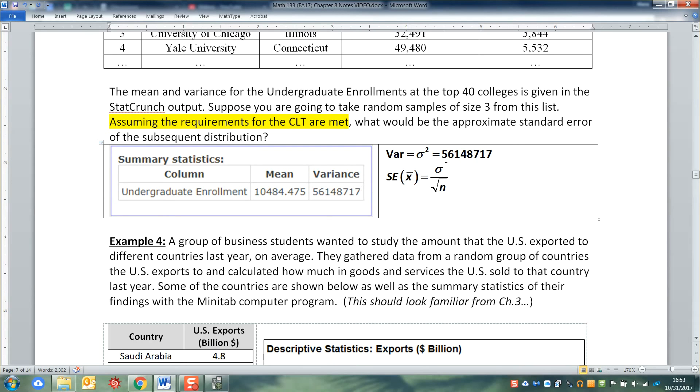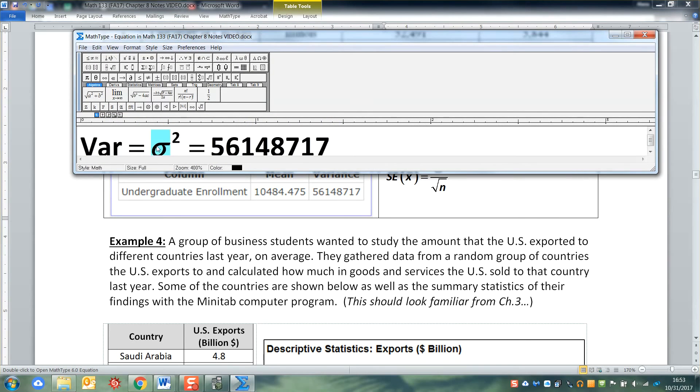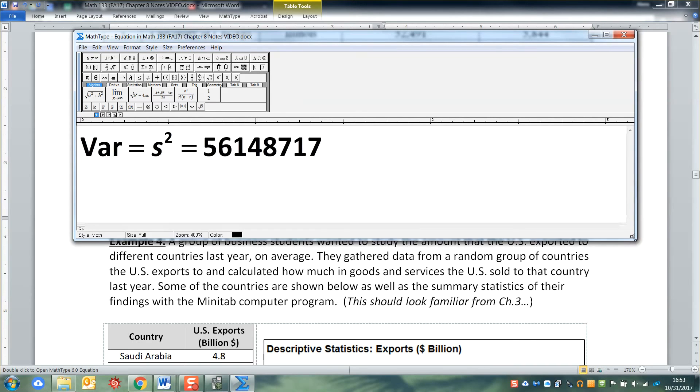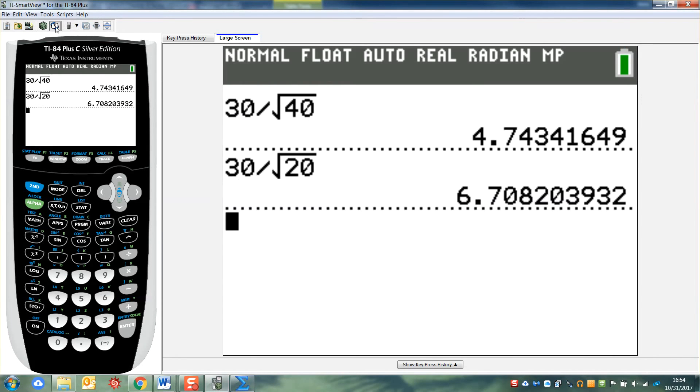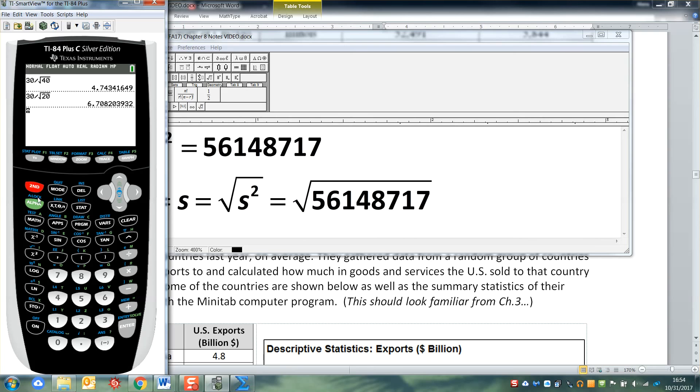So notice right away that the table gives you the variance, which is 5,614,871.7. Now we know from chapter 3 that that's σ squared, or s squared, actually. It's probably, this is a sample, so it's s squared, right? Because this was a sample of the colleges and universities. So then that means that the standard deviation, which is s, is the square root of s squared, which is the square root of 5,614,871.7, and I'm going to grab a calculator because I'm not going to figure that out on my own.